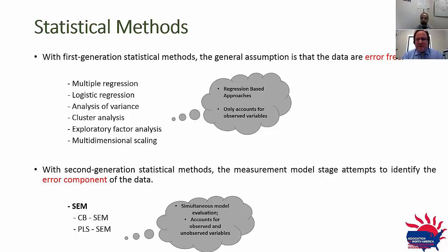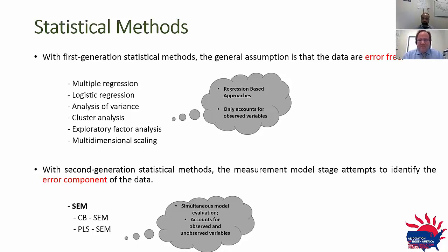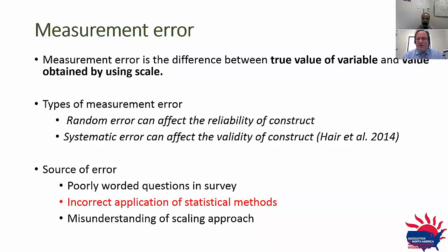In second generation statistical methods, on the other hand, the measurement model stage attempts to identify the error component of the data. The method using second generation statistical methods is structural equation modeling, as you all know, and more than half of you have already used this — either covariance-based SEM or partial least squares SEM. Knowing this, we would like to talk a little bit about measurement error.